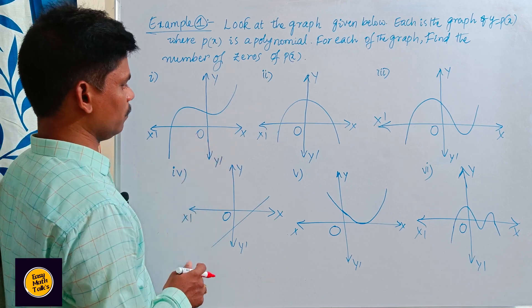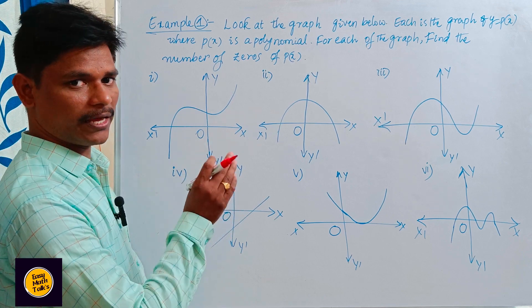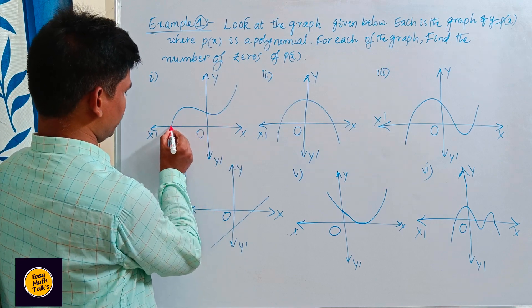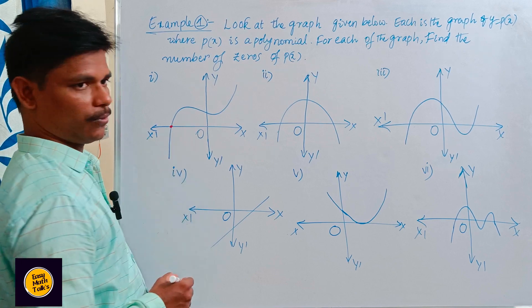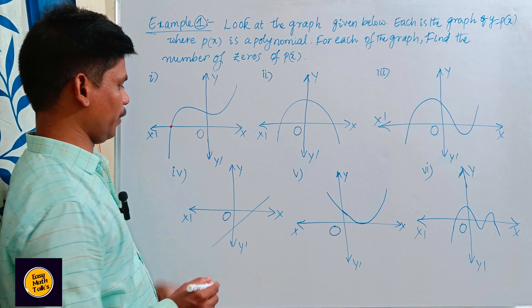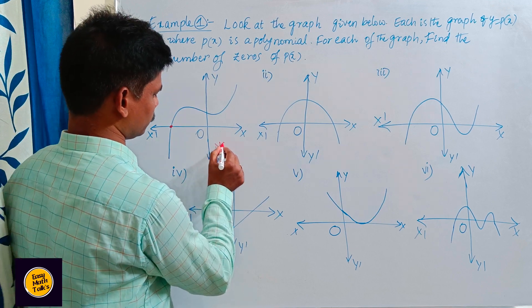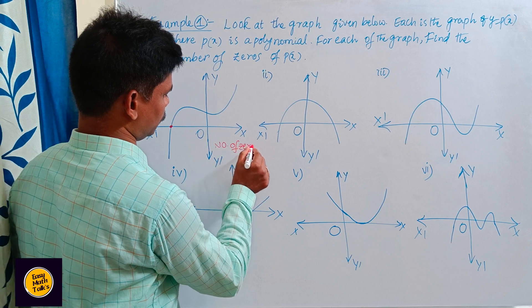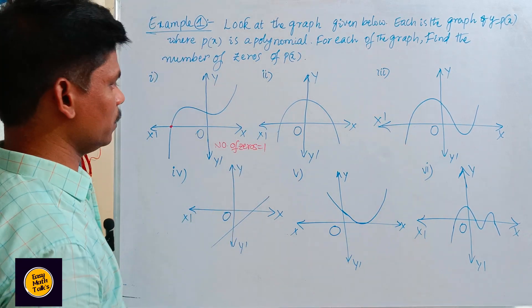See this first one. The graph intersects the x-axis at one point. So the number of zeros is equal to one.